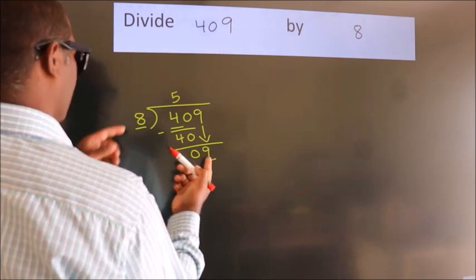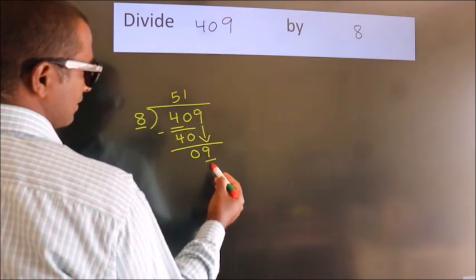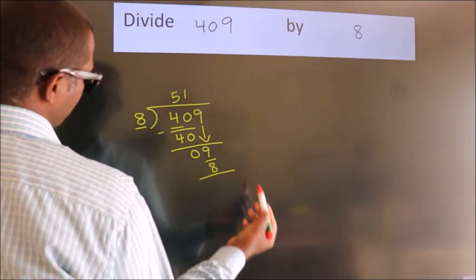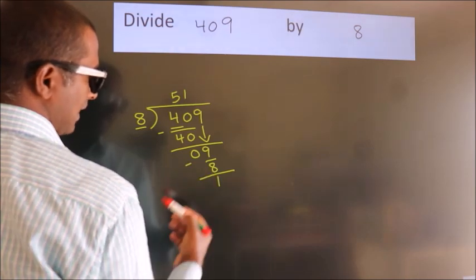A number close to 9 in 8 table is 8 once 8. Now we subtract. We get 1.